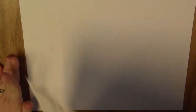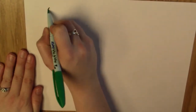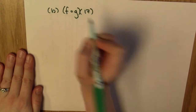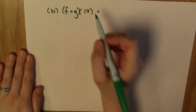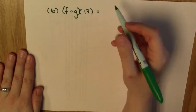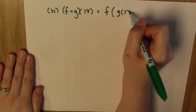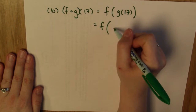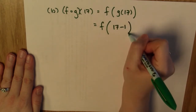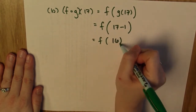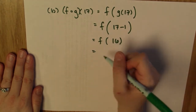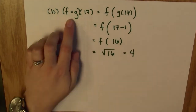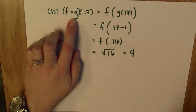For part b, I need to find f composed with g of 17. I plug 17 into g first, then plug the result into f. So this is f of g of 17. G of 17 is 17 minus 1, which is 16. So this is f of 16. F takes the input and takes the square root of it, so I have the square root of 16, which is 4. Therefore f composed with g of 17 is equal to 4.